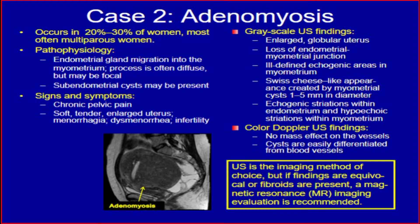Grayscale ultrasound findings: enlarged globular uterus, loss of endometrial-myometrial junction, ill-defined echogenic areas in the myometrium, Swiss cheese-like appearance created by myometrial cysts 1–5 mm in diameter, and echogenic striations within the endometrium with hypoechoic striations within the myometrium. Color Doppler ultrasound findings: no mass effect on the vessels; cysts are easily differentiated from blood vessels. Ultrasound is the imaging method of choice, but if findings are equivocal or fibroids are present, MRI evaluation is recommended.